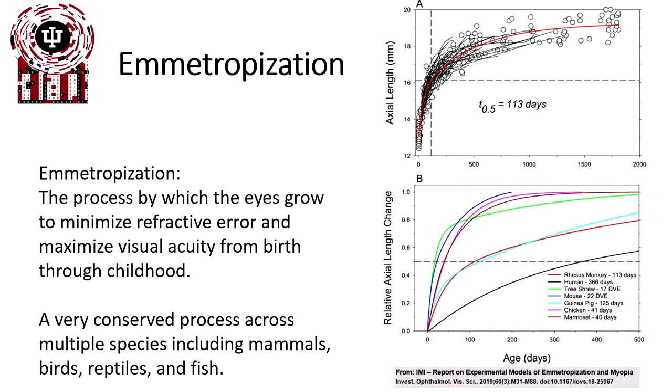It's a very conserved process across multiple different species, including mammals, birds, reptiles, and fish. Essentially, at birth, the eye has no idea what position is optically focused correctly, so there's a wide range of possibilities, and it's relatively shorter than average. Once vision starts to occur at birth, when the eyes open and light starts to enter, the eyes start to grow to optimize their vision and minimize refractive error throughout childhood.